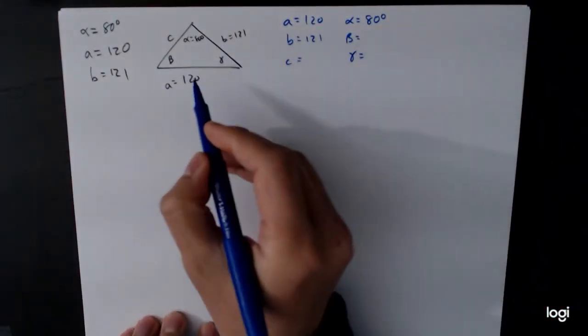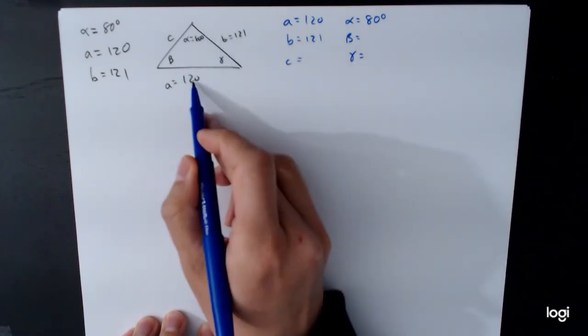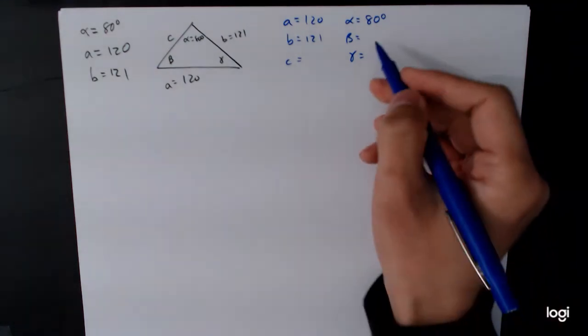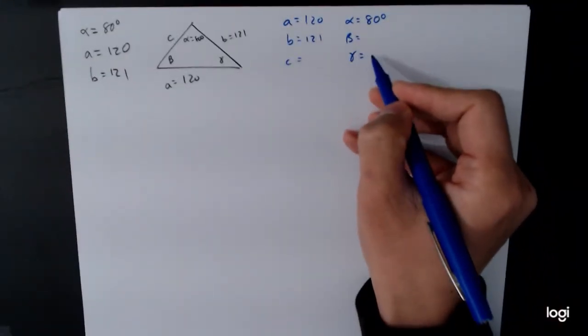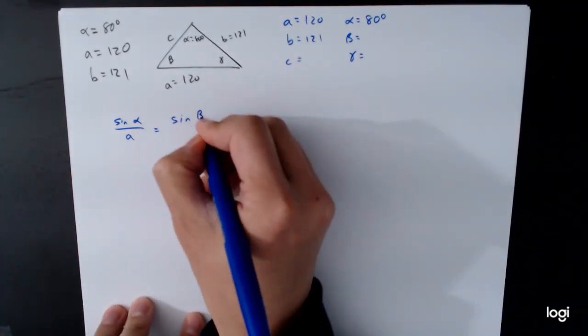Okay, so once again, angle, side, side. These are the three known, angle, side, side. And so we can't find the angle first, so we're going to have to set up our law of sines.